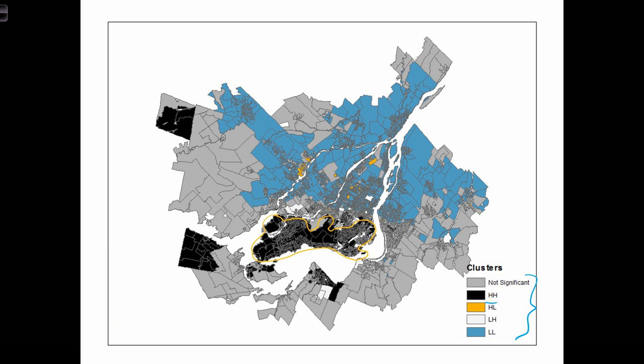The low with low are all of these blue areas. Those are locations where we have a lot of French speakers living close by to other French speakers. We have all of these locations being these low with low clusters.